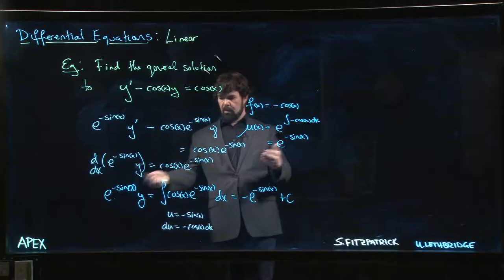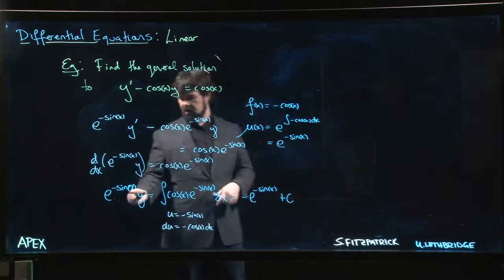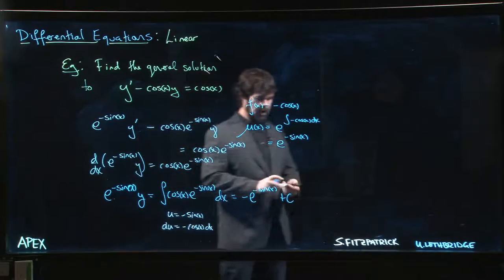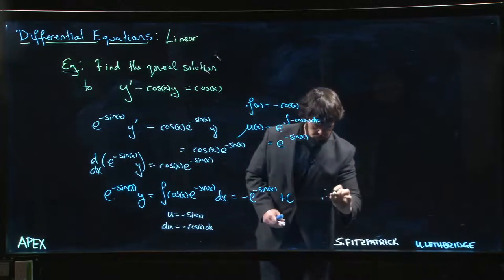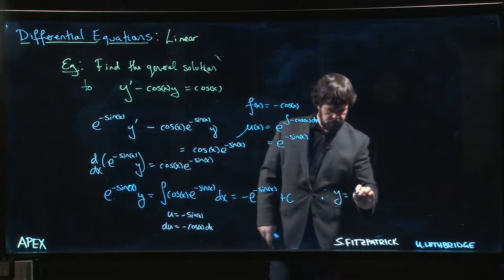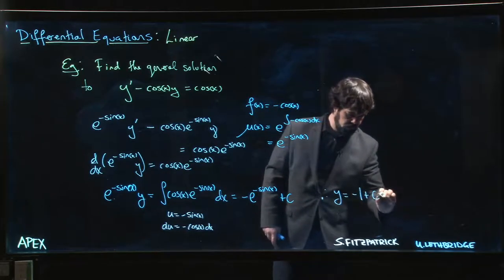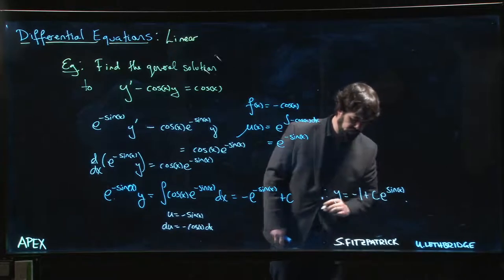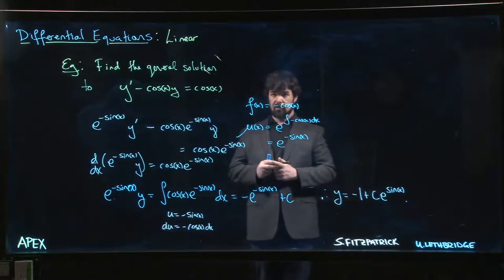So now we have to solve for y. So we multiply both sides by e to the plus sine x, get rid of it on this side. And what we get is that y is equal to minus 1 plus c e to the sine x. And that's our solution.